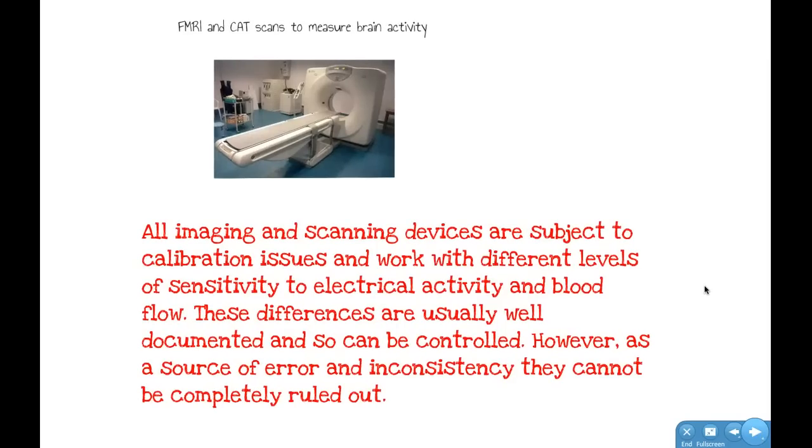Here's another one for you, the famous fMRI machine here. Or actually this is a CAT scanner. We use these to measure brain activity in various ways, and you think that's pretty objective, fairly reliable. But again, these things have to be calibrated, and they're not always calibrated to the same levels of accuracy or sensitivity. The data about accuracy and sensitivity on this machine is going to be well documented and well publicised, but the fact that it exists at all means that it's always a potential source of inconsistency and error. And you can't rule it out, not completely.